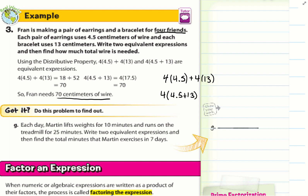Try problem g: Each day Martin lifts for 10 minutes and runs on the treadmill for 25 minutes. Write two equivalent expressions and find the total minutes Martin exercises in seven days. Since he does this each day for 7 days: 7 times 10 plus 7 times 25, and equivalently 7(10 + 25). That gives 70 plus 175, which equals 245 minutes.